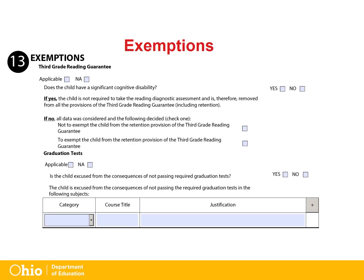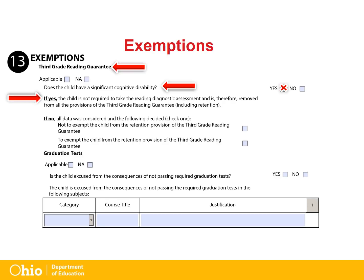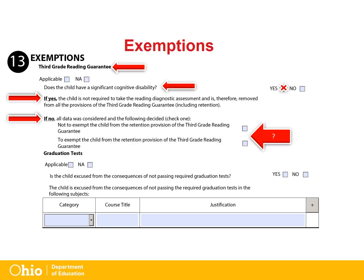Section 13 has been added to document test exemptions. One area of exemption is a third grade reading guarantee. If the child has a significant cognitive disability, the child is not required to take the reading diagnostic assessment and is therefore removed from all provisions of the third grade reading guarantee, including retention. If the child does not have a significant cognitive disability, all data needs to be considered and the team needs to decide whether the child will be exempt from the retention provision of the third grade reading guarantee. See the third grade reading guarantee guidance manual on ODE's website for more information.